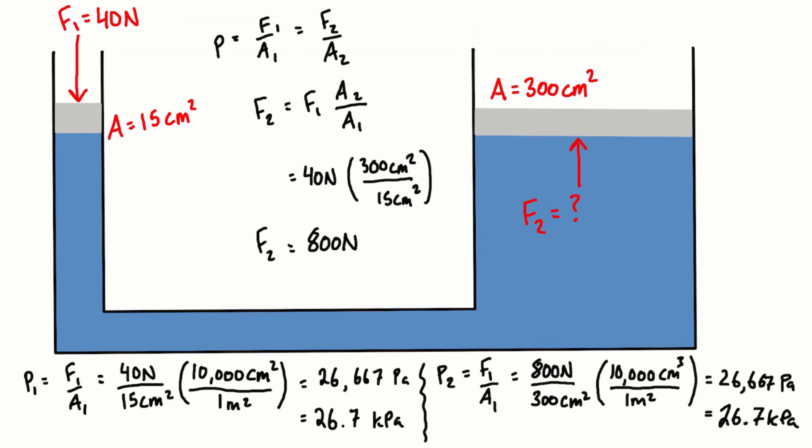So providing the pistons are at the same height, the formula that we just need is F1 over A1 is equal to F2 over A2. If the pistons are at different heights you would have to account for the difference in pressure as we go up or down in a column of a continuous fluid.